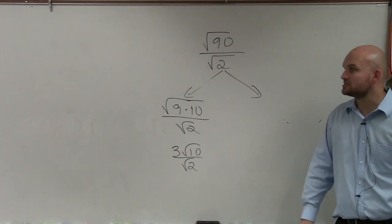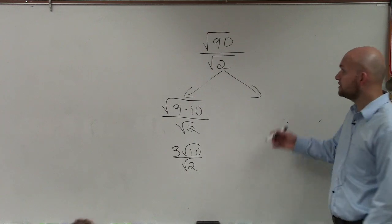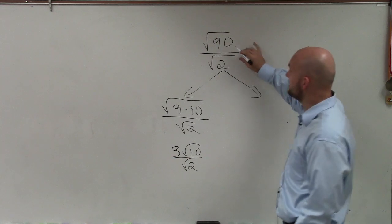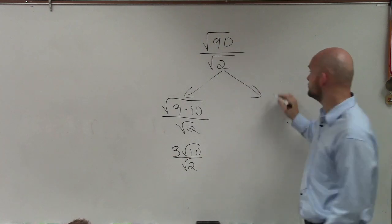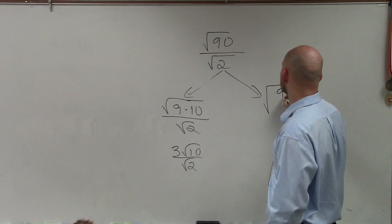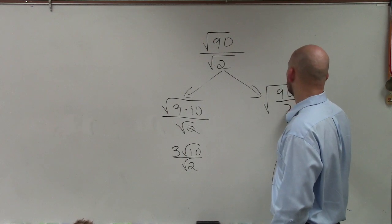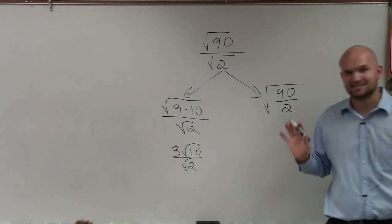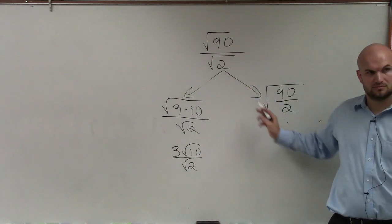Now, I'll finish this problem in just a second. The other way we can look at this is to understand that the square root of 90 divided by square root of 2, we can rewrite that as the square root of 90 over 2. It's the same thing.